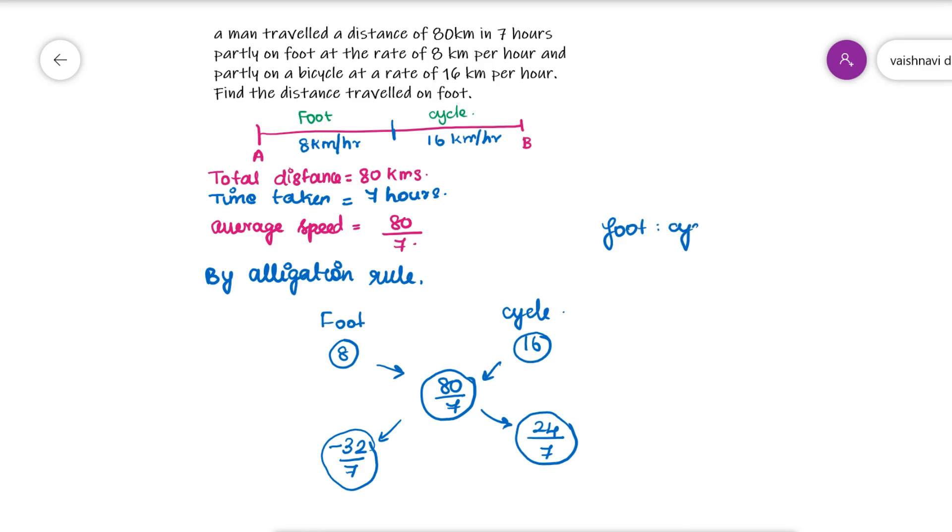So foot is to cycle, 32 to 24, which is 8 to 6. Now you have found the ratio of distances, that is 4 is to 3.